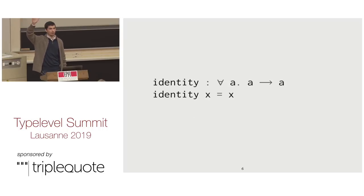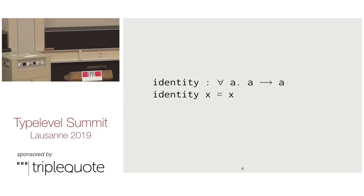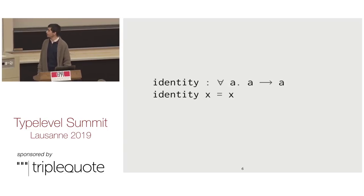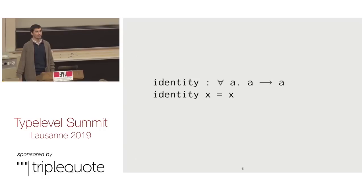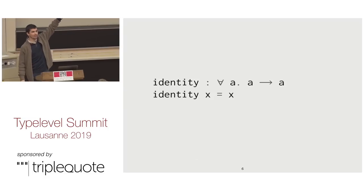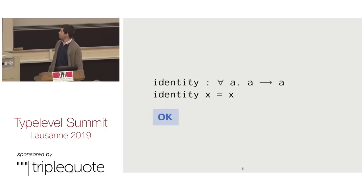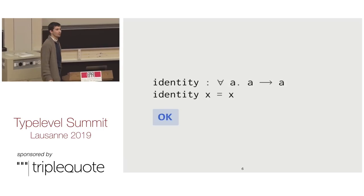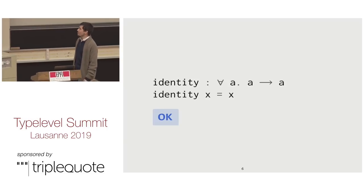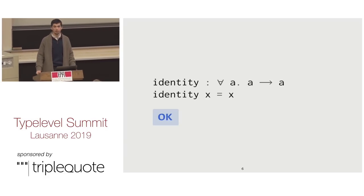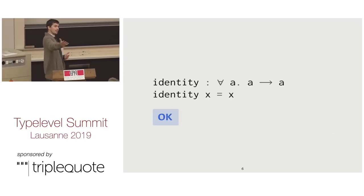Hands up if you're okay with that function — the identity function. It's a function that binds any value of type A, calls it x, and returns that value x. Is this a linear function? It is a linear function — this was a trick question. Linearity corresponds a bit to how we reason about things in the real world: if you give me an x, I can give you an x. That's easy.